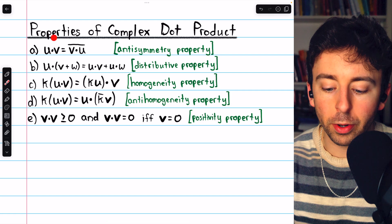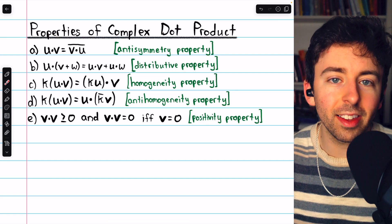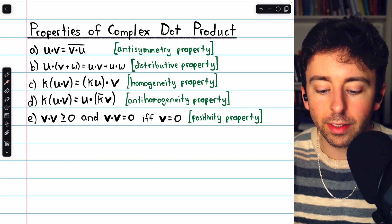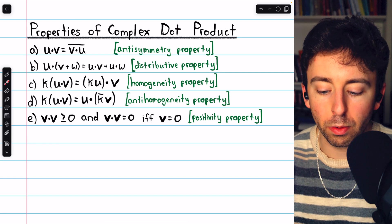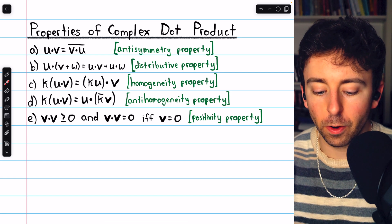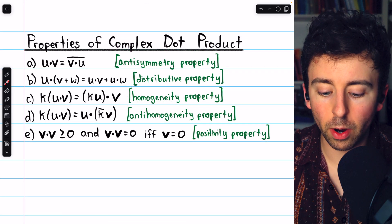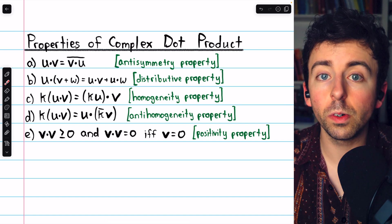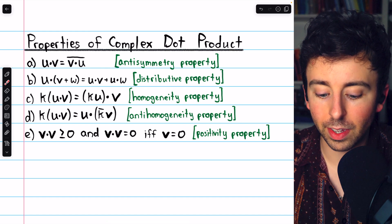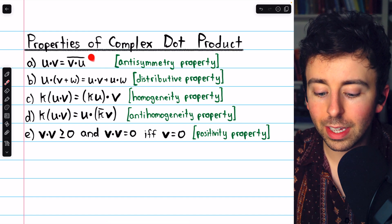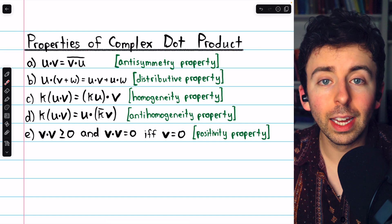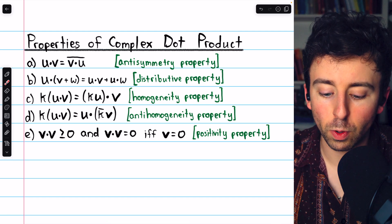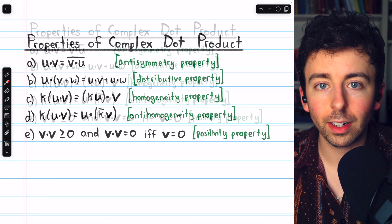Here are some properties that the complex dot product does have. As we saw, u dot v doesn't equal v dot u, but u dot v does equal the conjugate of v dot u. This is called the anti-symmetry property of the complex dot product.